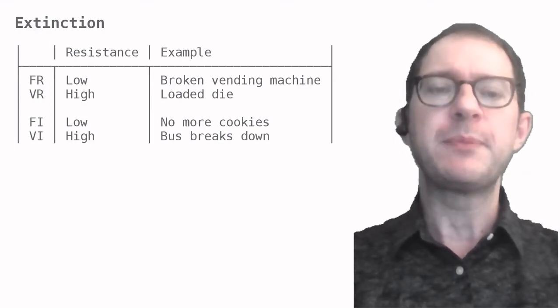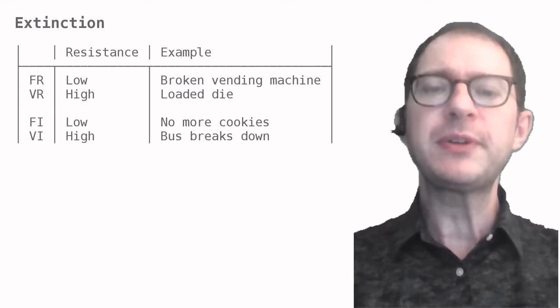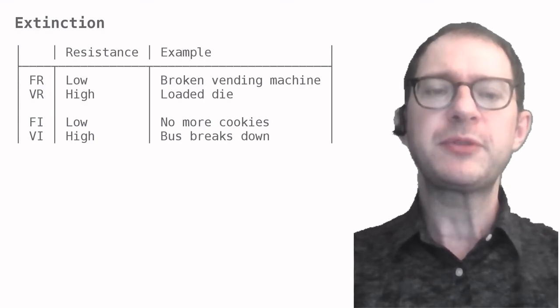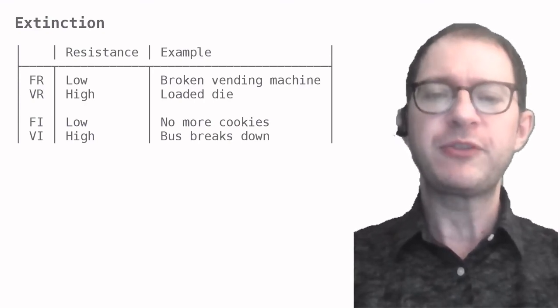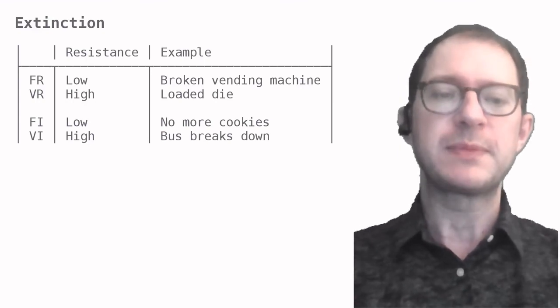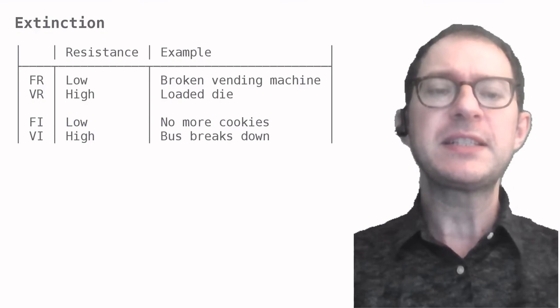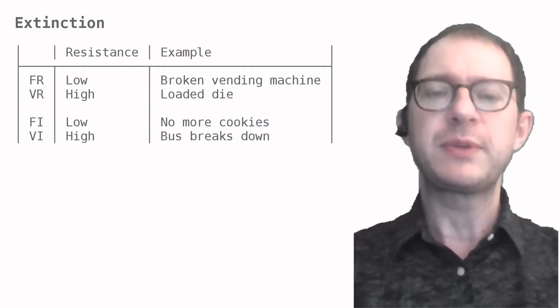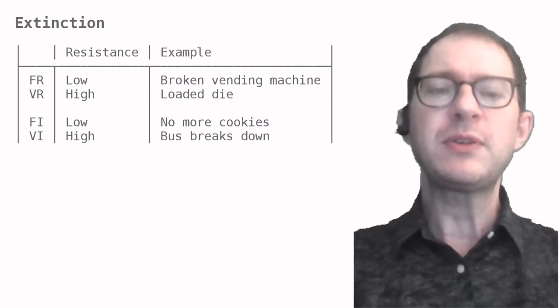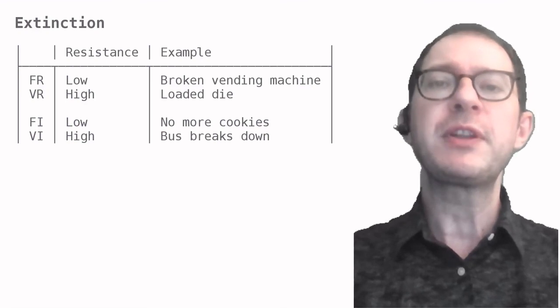How quickly and robustly a behavior can be extinguished is important because often we want to get rid of problem behavior, ranging from class disruptions to crimes. The research on schedules of reinforcement tells us that it does not only matter how we try to extinguish the behavior, but also how the behavior was previously reinforced.